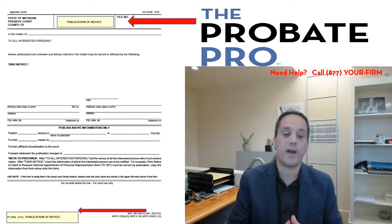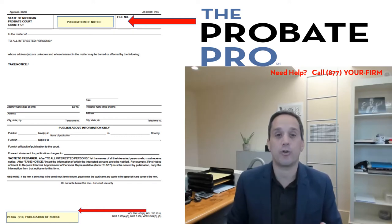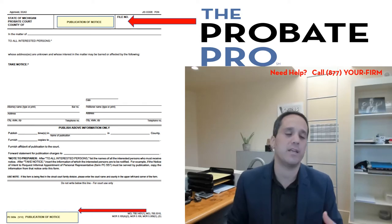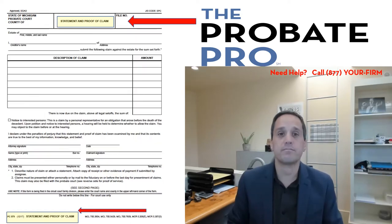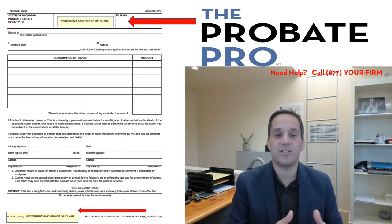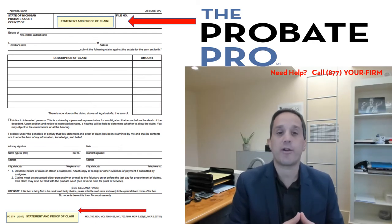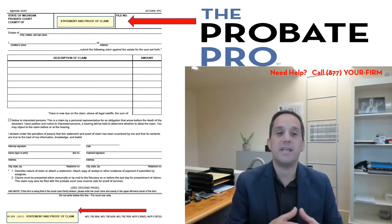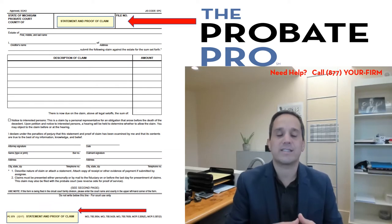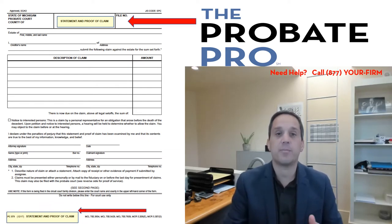It's kind of an archaic way of giving notice, but it is statutorily required that you publish for any unknown creditors to give them due process and a right to file a claim. The next document is the creditor form that begins the process of identifying when somebody claims to be a creditor of the estate.